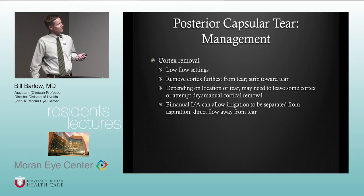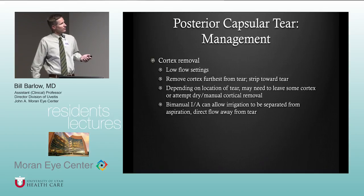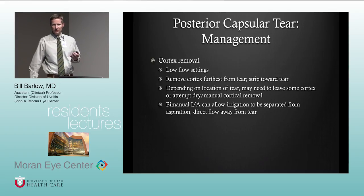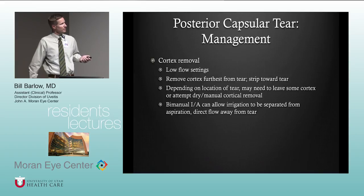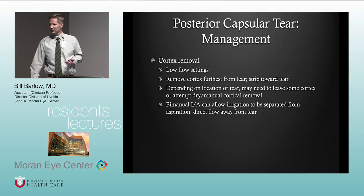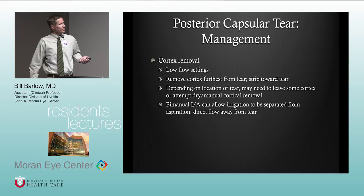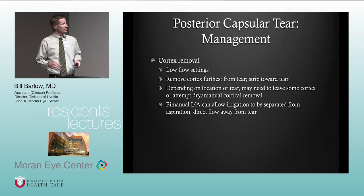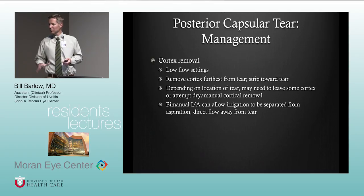When removing cortex in the setting of a tear, use low flow settings. Start with cortex furthest from the tear and strip towards the tear to minimize stress on the capsule. Depending on the tear location, dry or manual cortical removal techniques may be needed. Leaving a tiny bit of cortex in that area may not be the end of the world. Bimanual IA can separate irrigation from aspiration so you can direct irrigation away from the tear, helping maintain chamber space.